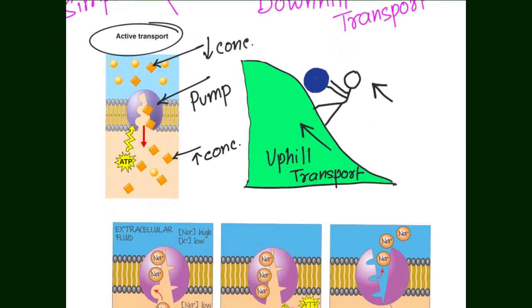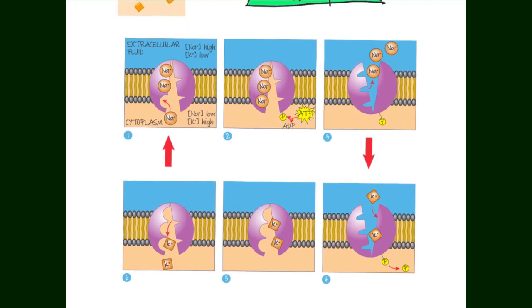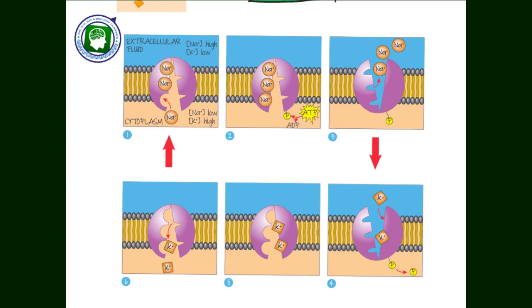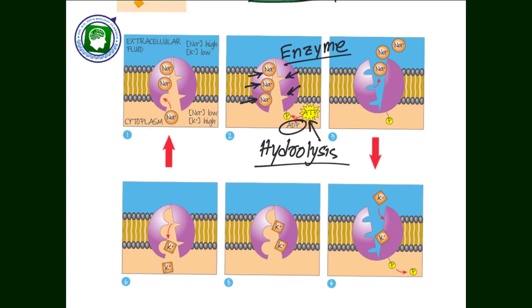This is the sodium-potassium ATPase pump, one of the most important membrane proteins behind the excitability of a neuron. It has three binding sites for sodium and two binding sites for potassium. When three cytoplasmic sodium ions bind to their sites, an ATP arrives and attaches to the protein, which acts as an ATPase enzyme. It causes hydrolysis of ATP, ADP is removed, and inorganic phosphate remains attached to the protein — this is called phosphorylation.